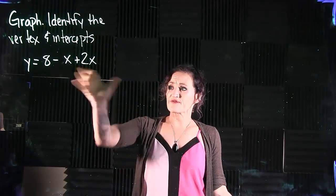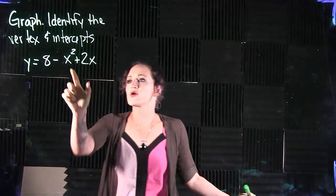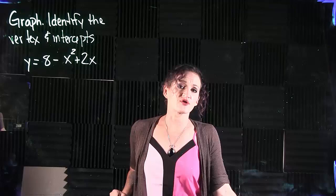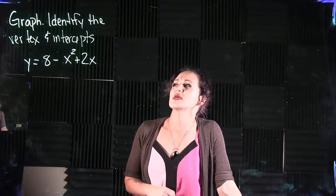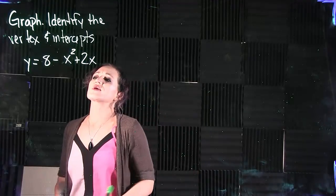For this example, we are going to graph the following problem. I just realized I left a squared off of that one there. We're also going to identify the vertex and the intercepts for this particular equation here. So first we want to graph this.